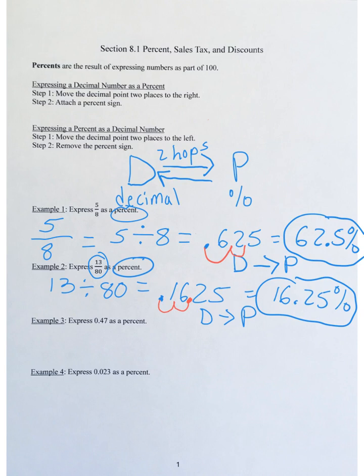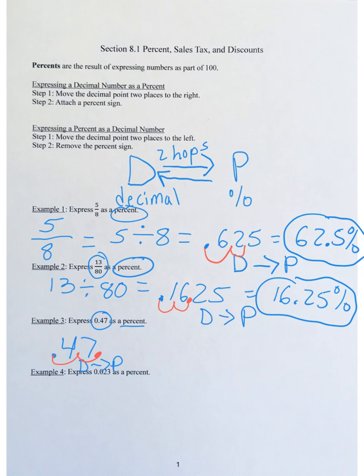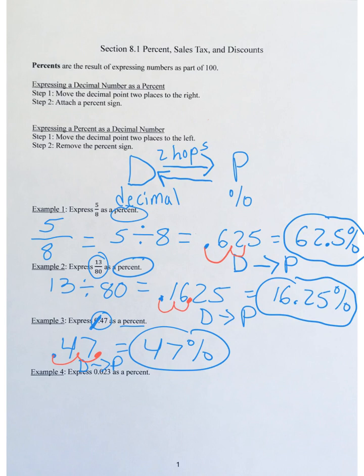Example three: express 0.47 as a percent. You can ignore the leading zero. Just slide the decimal point two hops to the right — hop one, hop two lands at the end of the number after the 7. This becomes 47%. Drop the leading zero — final answer: 47%.